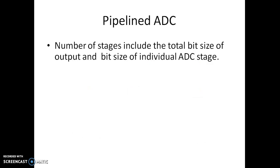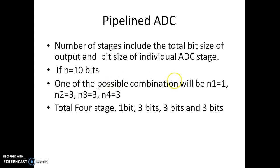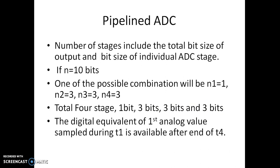The number of stages depends on the total bit size of the output. For example, assume n equals 10 bits. One possible combination is: the first stage as 1 bit, followed by three stages of 3 bits each — so 1 bit, 3 bits, 3 bits, 3 bits — giving four stages total. This is one possible way of implementing a 10-bit pipeline ADC.